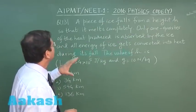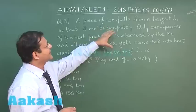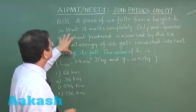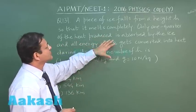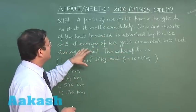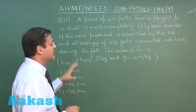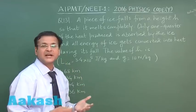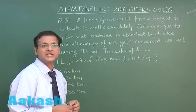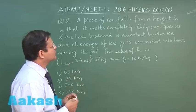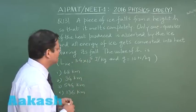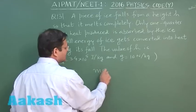This question 131 reads that a piece of ice falls from a height h so that it melts completely. Only one quarter of the heat produced is absorbed by the ice, and all energy of ice gets converted into heat during its fall. The potential energy is mgh.